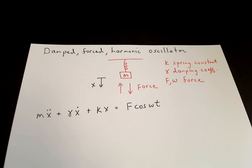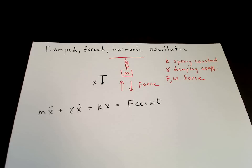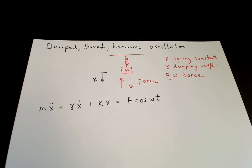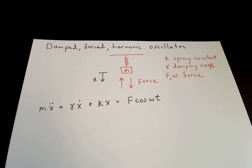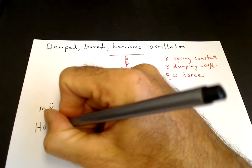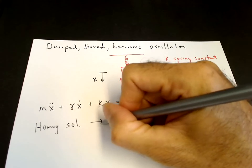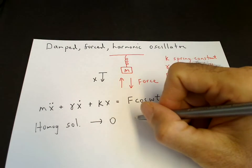The solution of this inhomogeneous equation is the sum of the homogeneous solution plus the particular solution. If you work out the homogeneous solution, what you'll find is that the real part of the roots of the characteristic equation are always negative, which means the homogeneous solution always has a decaying exponential as part of the solution. So it goes to zero at long times.